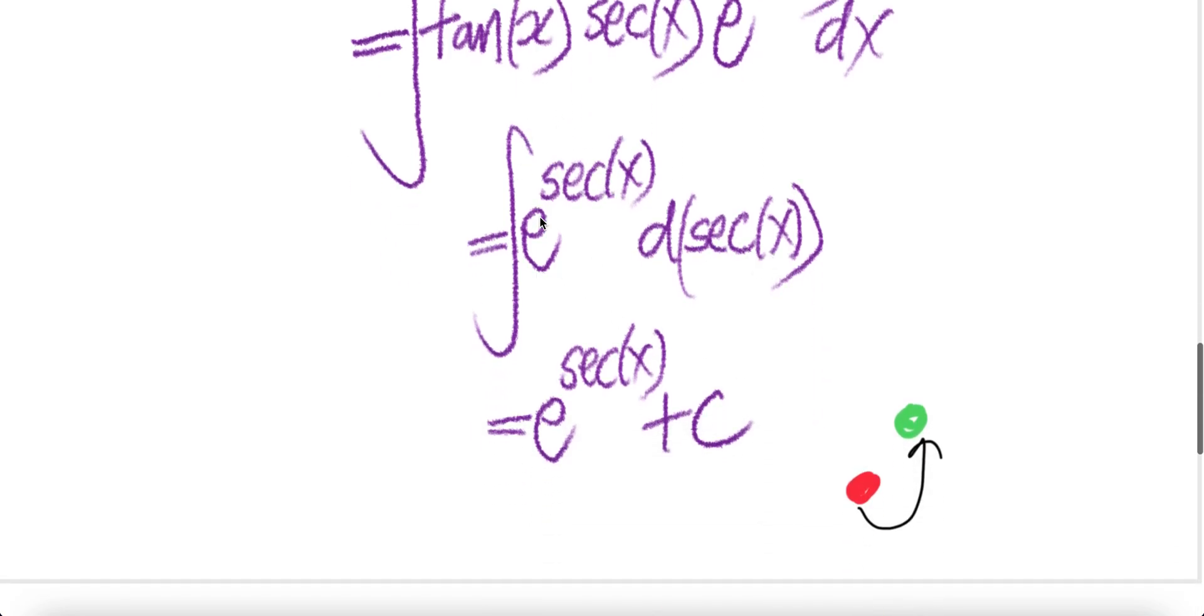Now this is a simple integral. Integral of e to the power y dy is e to the power y, where y is sec x, plus C. Done.